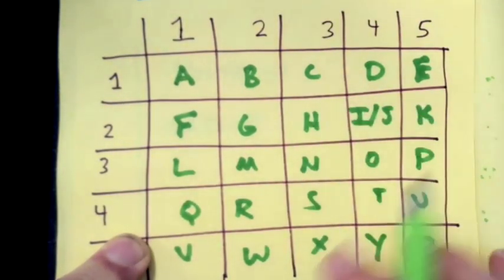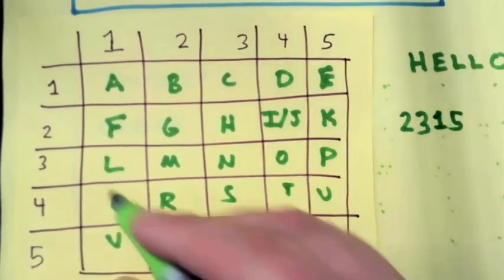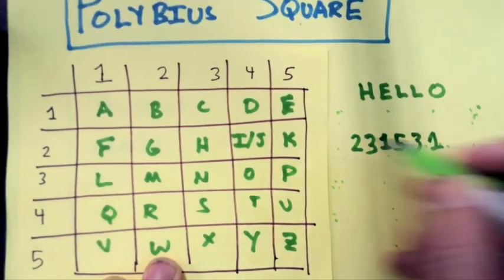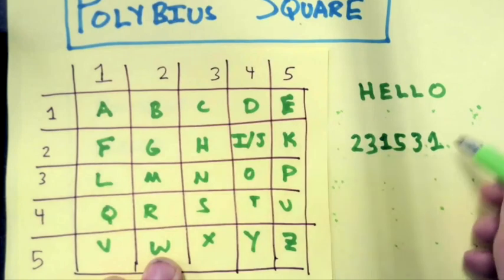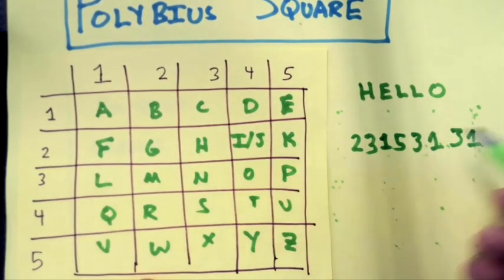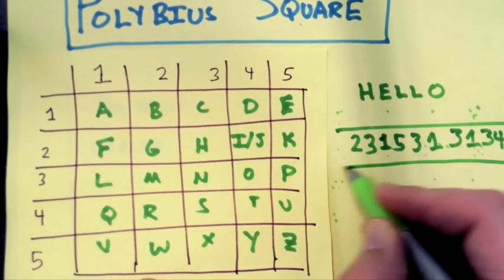Now, what would E be? E is 1, 5. And L would be 3, 1. And L would be 3, 1. And O would be 3, 4. And so this would be the output of my message.